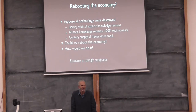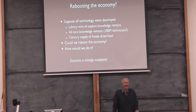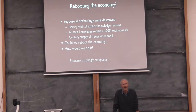Question from audience: What's your plan for a Carrington event type scenario? A Carrington event — it's like a solar flare that fries everything. It happened in 1859 or something like that — the solar flare fried all the telegraph volumes.